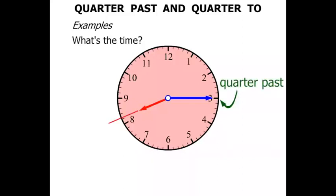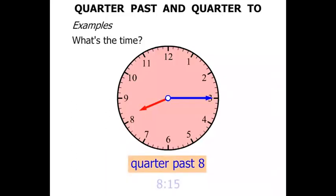We'll look at the short hand, the hour hand. It's just gone past the eight. So we say then that it's quarter past eight. And quarter past eight in digital form, 8.15.